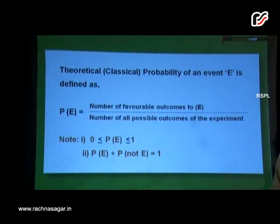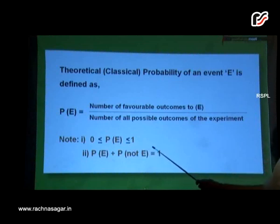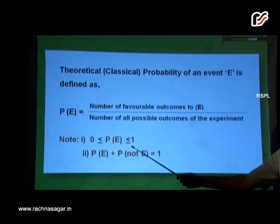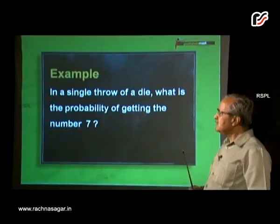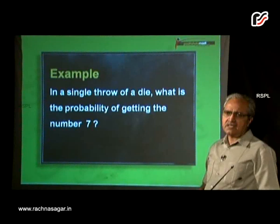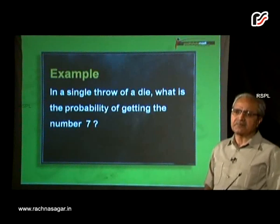Also we know that probability of an event plus probability of not happening of an event, that is P(E) plus P(not E) is equal to 1. On this, let us try to work out some examples.